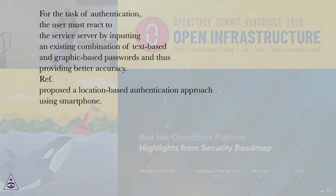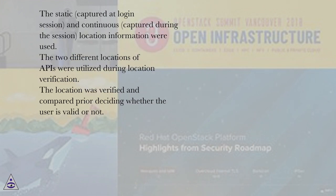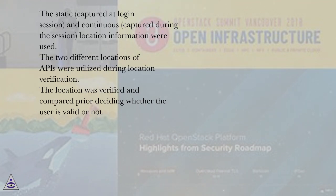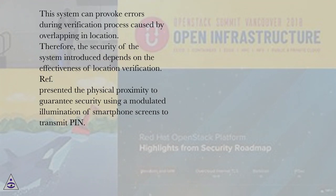A location-based authentication approach using smartphones was proposed. Static location information, captured at login session, and continuous location information, captured during the session, were used. Two different location APIs were utilized during location verification. The location was verified and compared prior to deciding whether the user is valid or not. This system can provoke errors during verification caused by overlapping in location. Therefore, the security of this system depends on the effectiveness of location verification.